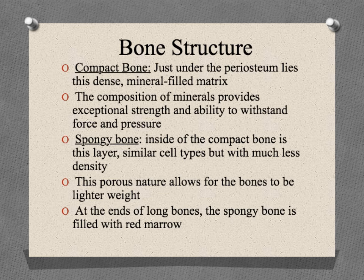We have the compact bone, which is sort of the first layer under the periosteum. The compact bone, as you might expect, is very dense. The cells are packed very tightly together and there is a high composition of minerals — things like calcium and phosphate — that provide both structure and strength. Because of the compact bone, the overall bone structure is very strong and resistant to bending, force, and shock.